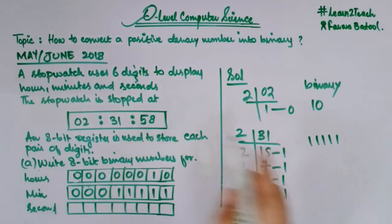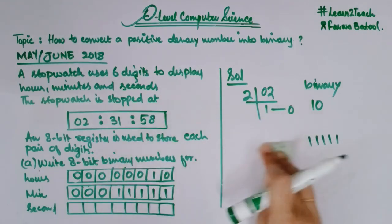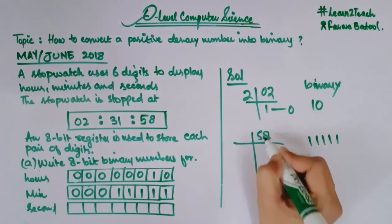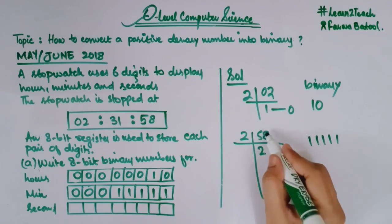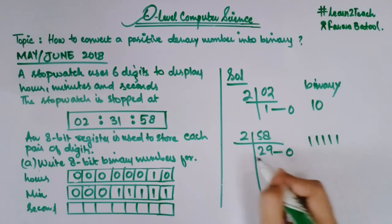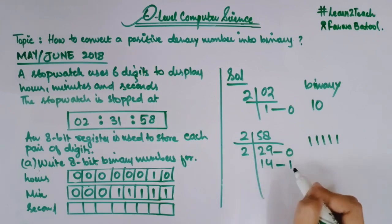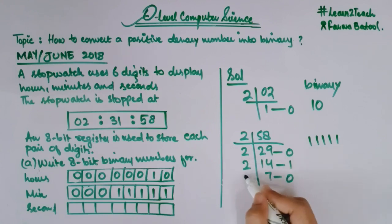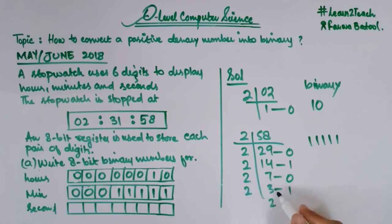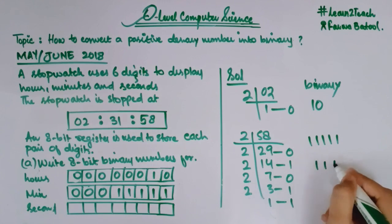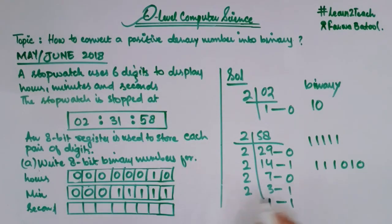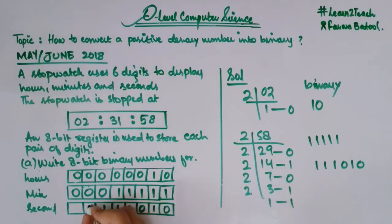For seconds, I have 58. Taking the LCM of 58 by 2: 58 by 2 gives 29 remainder 0; 29 by 2 gives 14 remainder 1; 14 by 2 gives 7 remainder 0; 7 by 2 gives 3 remainder 1; 3 by 2 gives 1 remainder 1; remainder 1 at the end. Reading in reverse: 1, 1, 1, 0, 1, 0. Writing the answer into the register: 0, 0, 1, 1, 1, 0, 1, 0. The remaining two positions are filled with 0.